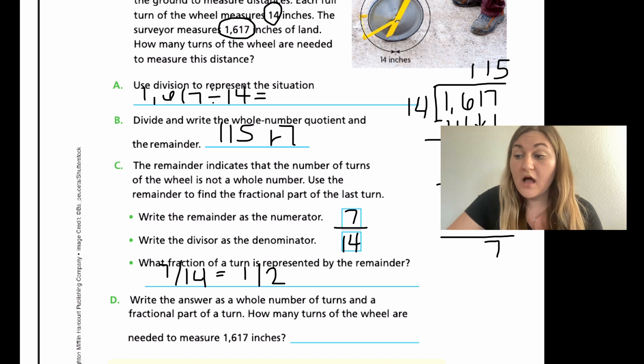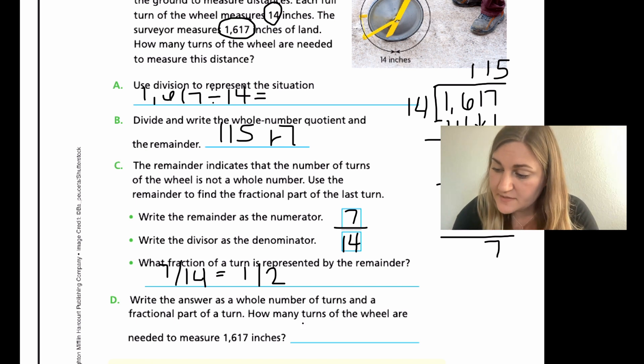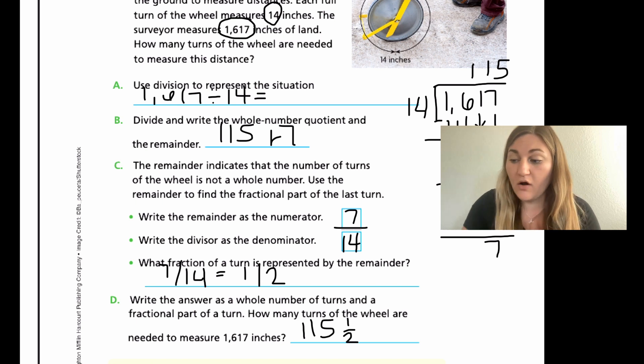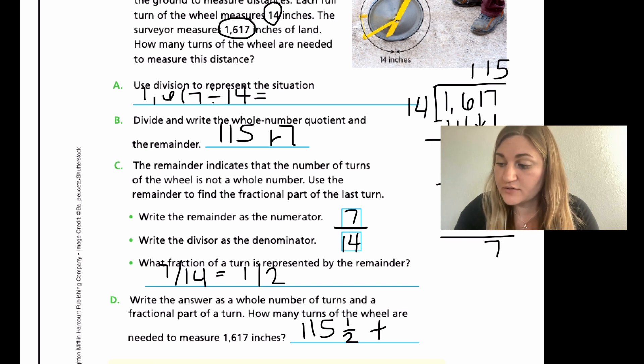Part D says write the answer as a whole number of turns in a fractional part of a turn. So we're going to take the whole 115 turns and then write the fractional part that we just found out as the total. The wheel has to turn 115 times, but also one more half of a time to get all of the 1,617 inches. So 115 and a half turns.